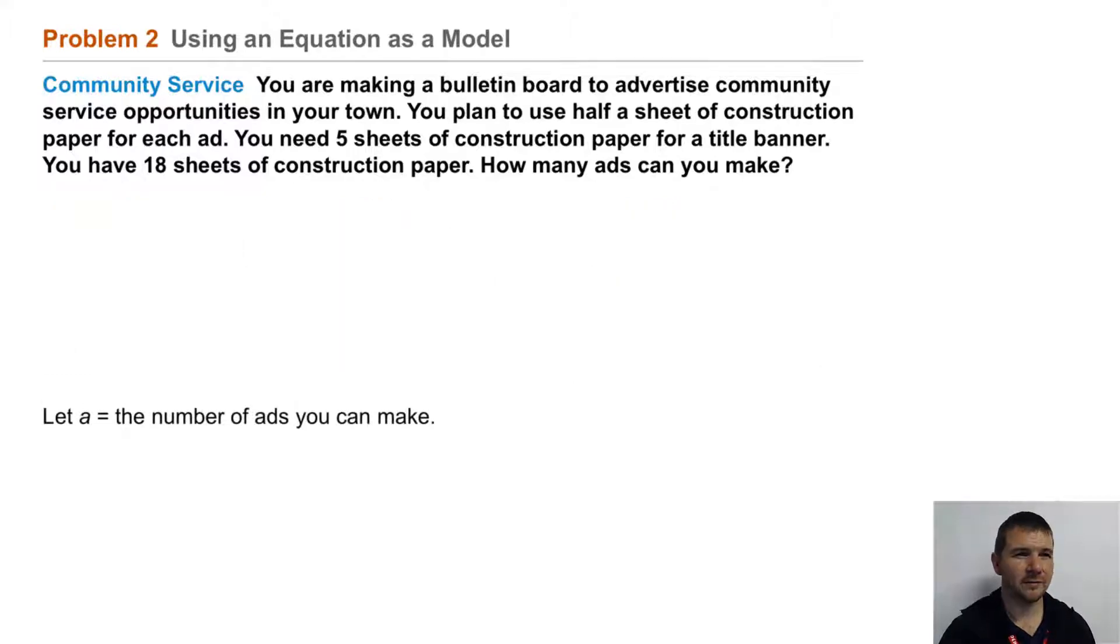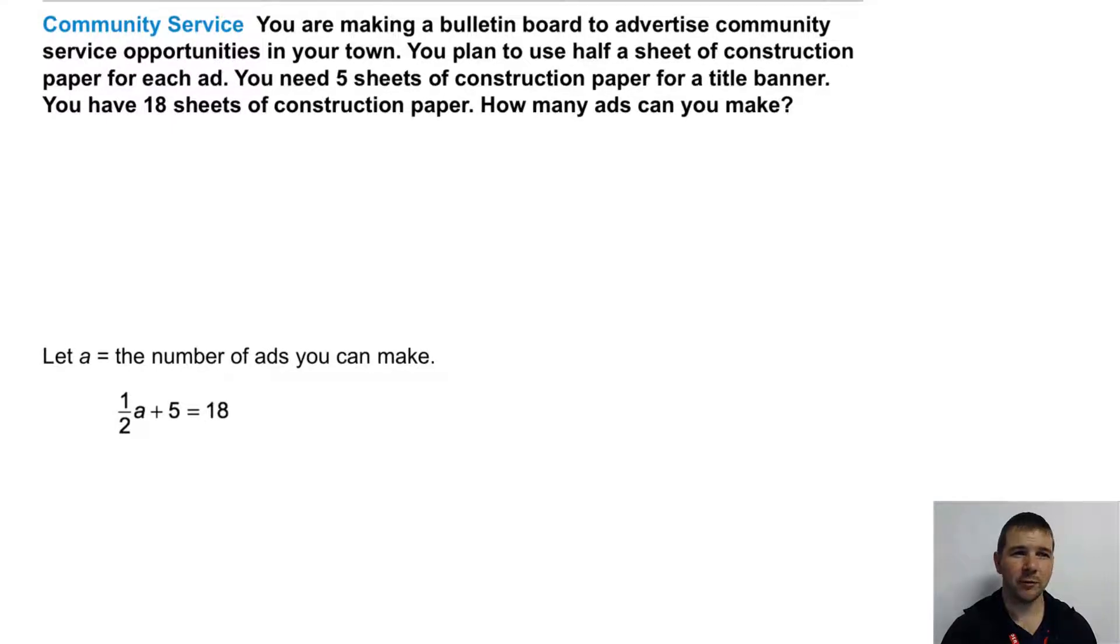We'll define a variable. We can let a equal the number of ads you can make and establish or set up the equation. One half times a plus five equals 18.